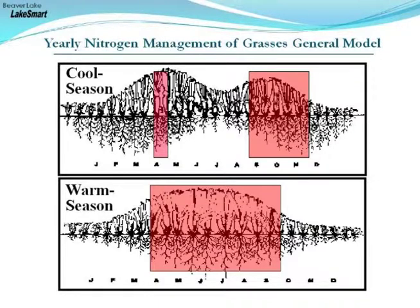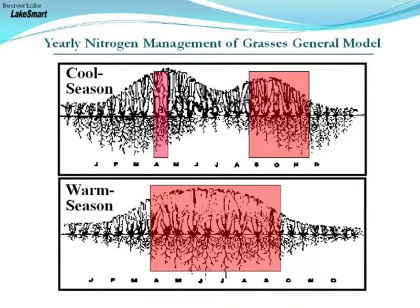Depending on whether you have a cool season grass like tall fescue, perennial ryegrass, or Kentucky bluegrass, or a warm season grass like bermudagrass, zoysiagrass, St. Augustine, or centipede grass, you'll fertilize at different times of year. Cool season grasses get fertilized once in spring and twice in fall, coinciding with their most active growth. Warm season grasses are fertilized in summer when they're actively growing, because if the plant isn't actively growing, it won't take up the nutrient — which could then leach into groundwater or feed weeds instead.